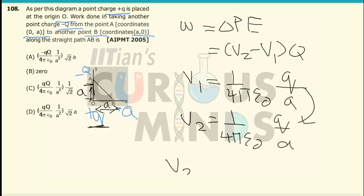V2 minus V1 will come out to be 0, so V2 is equal to V1. Therefore, V2 minus V1 will come out to be 0, so the work done will be equal to 0. It is equal to option number B.